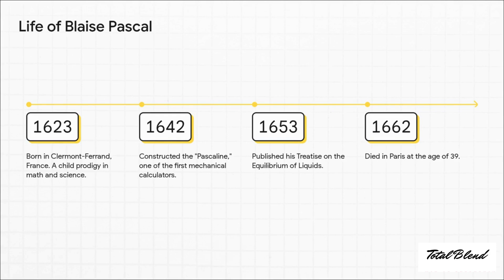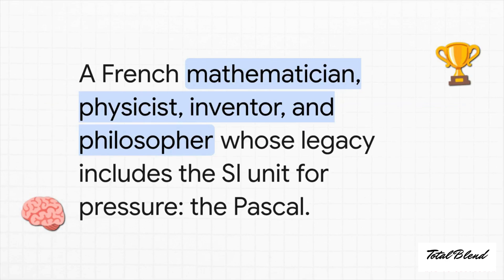He was a child prodigy in math. Can you imagine, before he was even 19 years old, he invented one of the world's first mechanical calculators, the Pascaline, mostly just to help his dad out with tedious tax calculations. His game-changing work on fluid dynamics came out in 1653, but tragically he died at the super young age of 39. But in that short life, wow, did he make an impact.